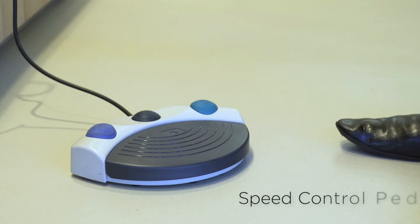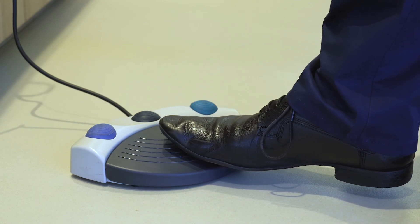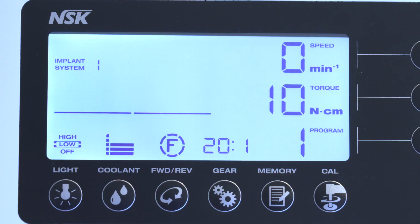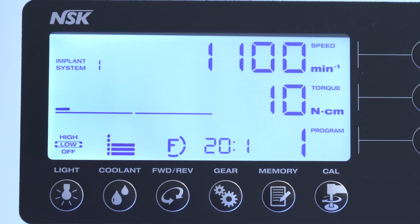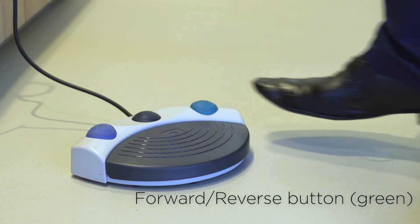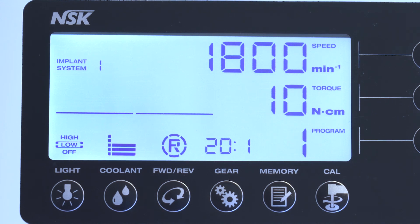Speed Control Pedal. Use to start and stop the micromotor and control the speed during operation. The micromotor operational speed is directly proportional to the position of the foot control up to the preset maximum. Forward Reverse Button Green. Use to change the rotational direction of the micromotor. Push once to change the rotational direction.